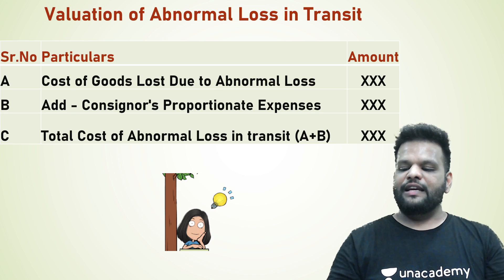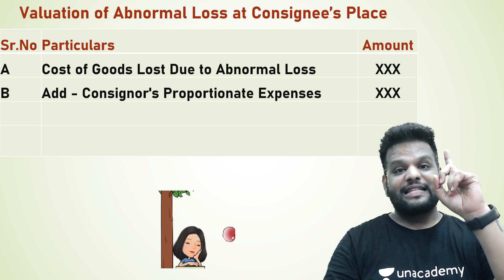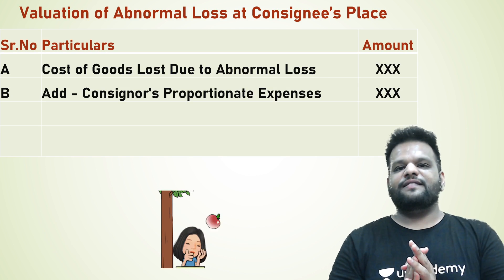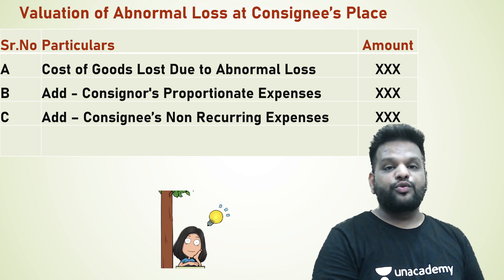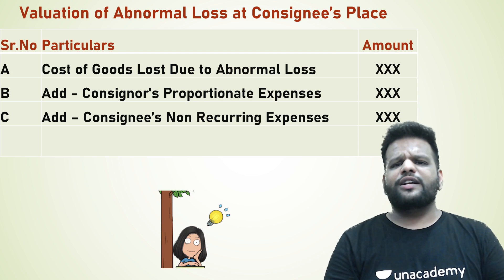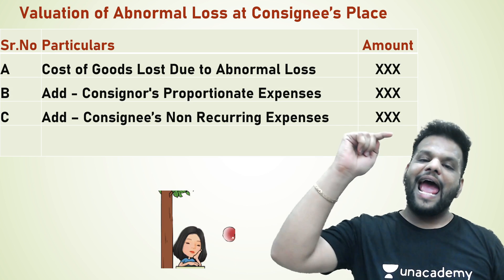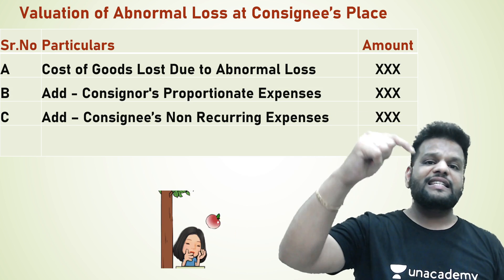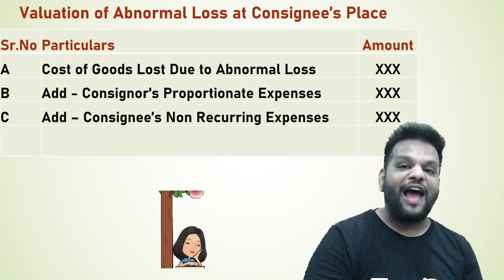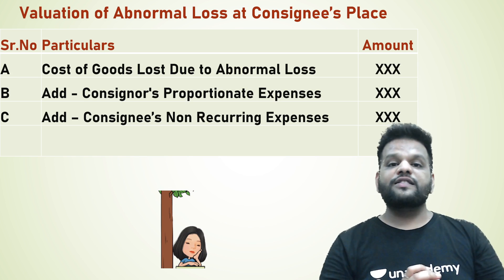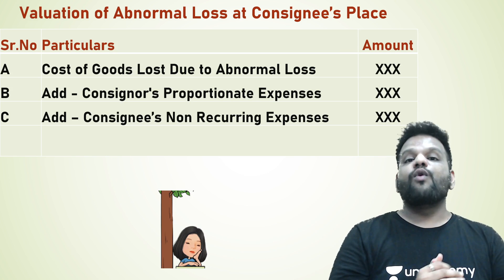What if the abnormal loss happens at the consignee's place? The valuation will include: cost of goods, plus consignor's expenses, plus consignee's non-recurring expenses. Non-recurring expenses are expenses incurred by the consignee wholly and exclusively for this consignment only. So the value = A + B + C.